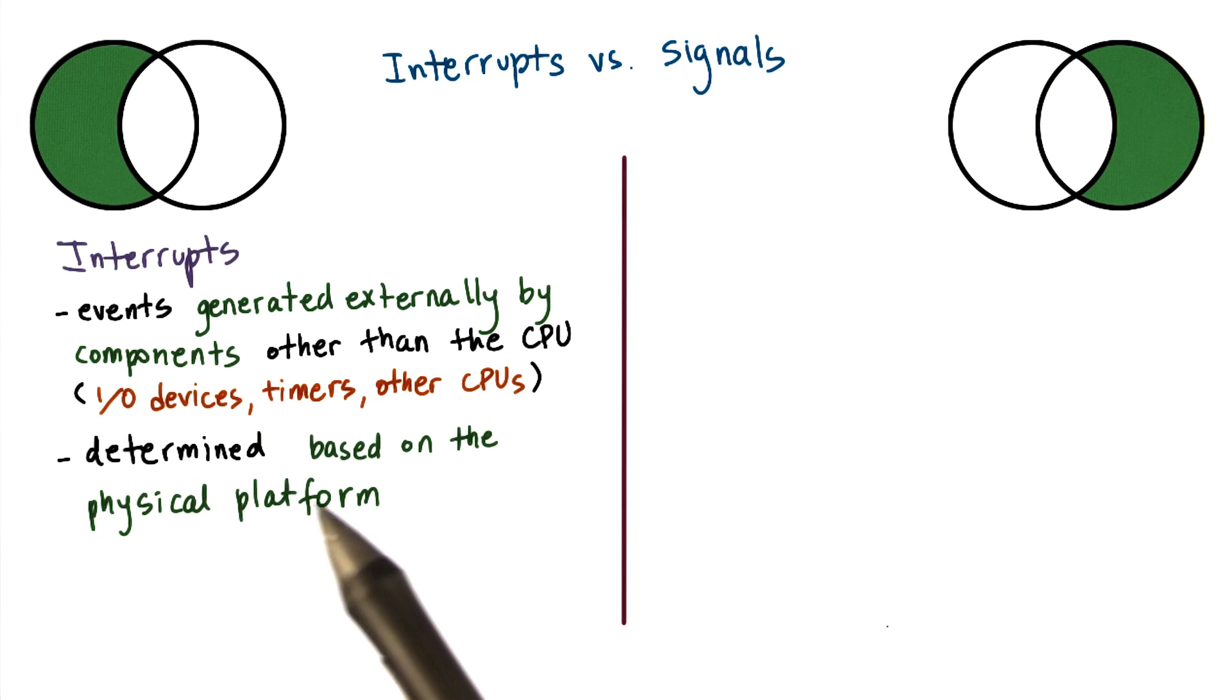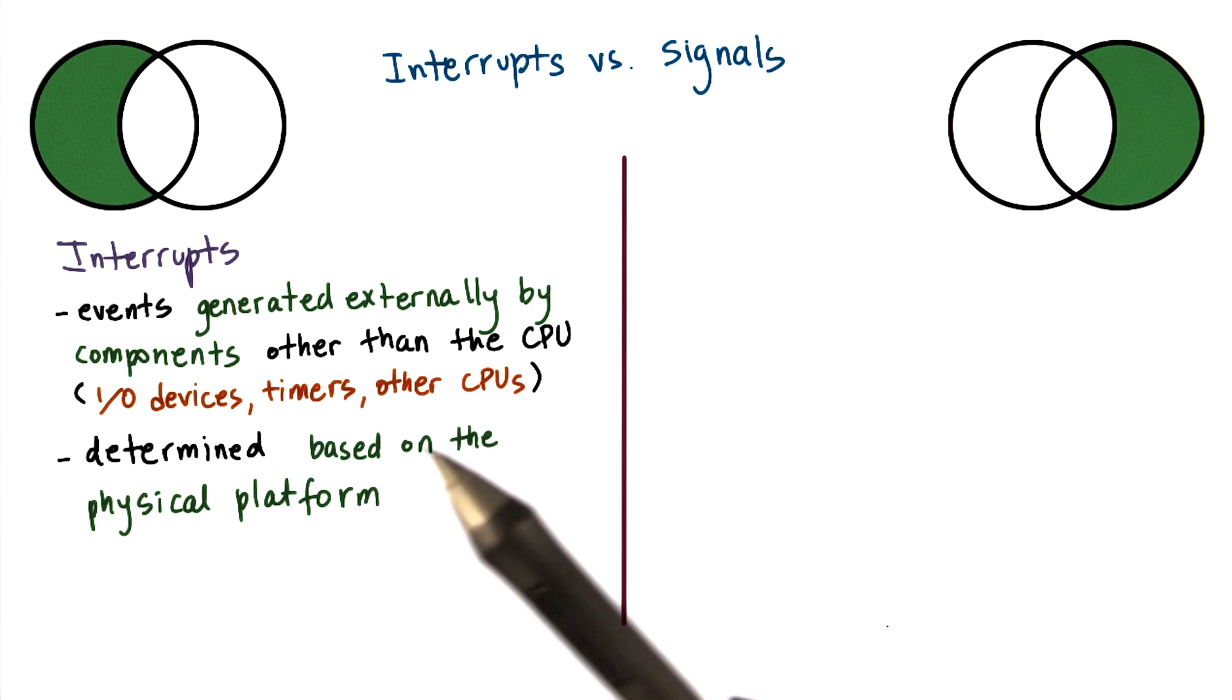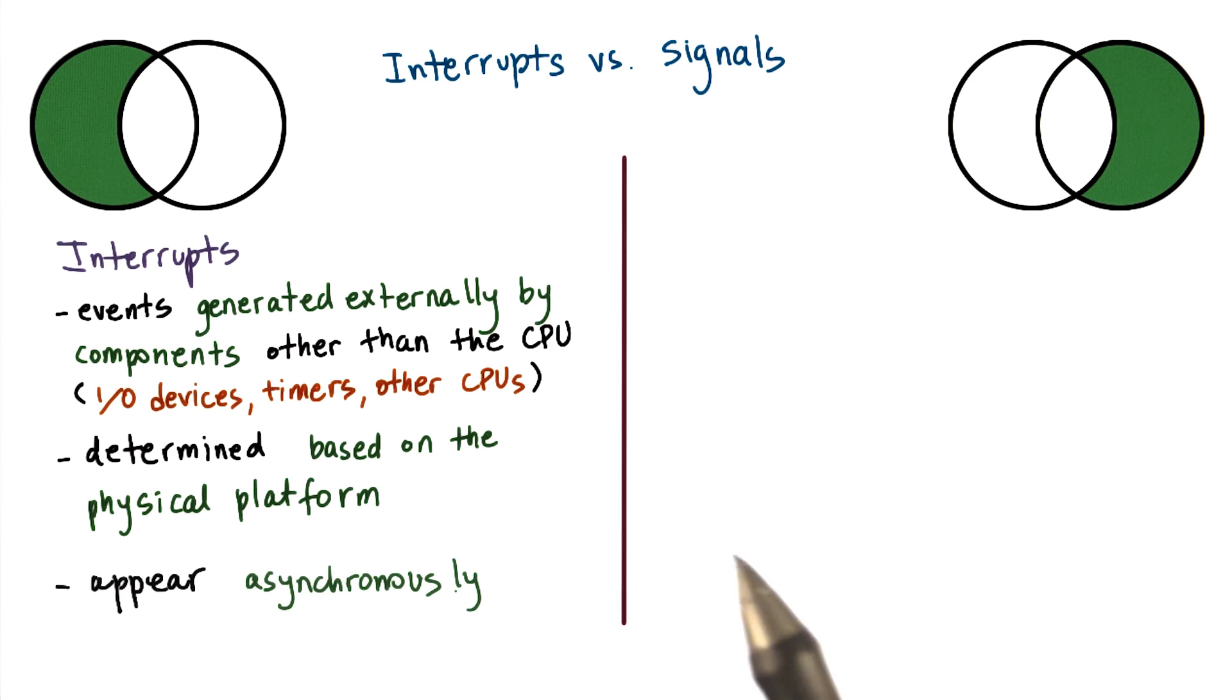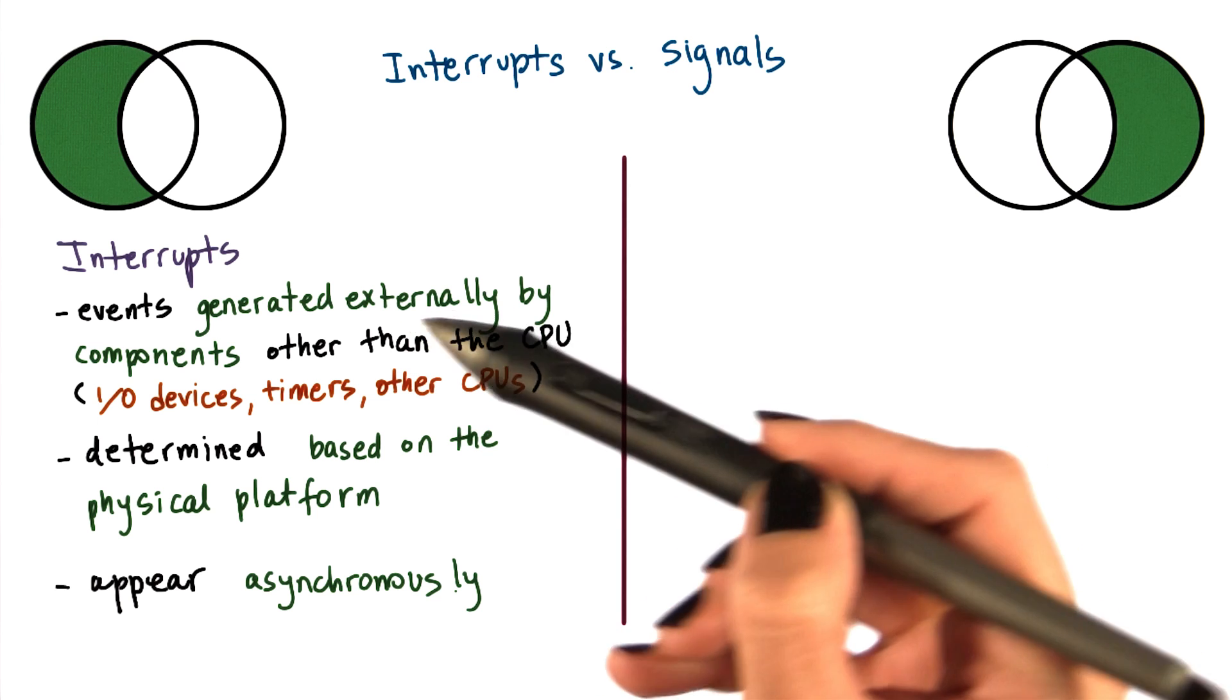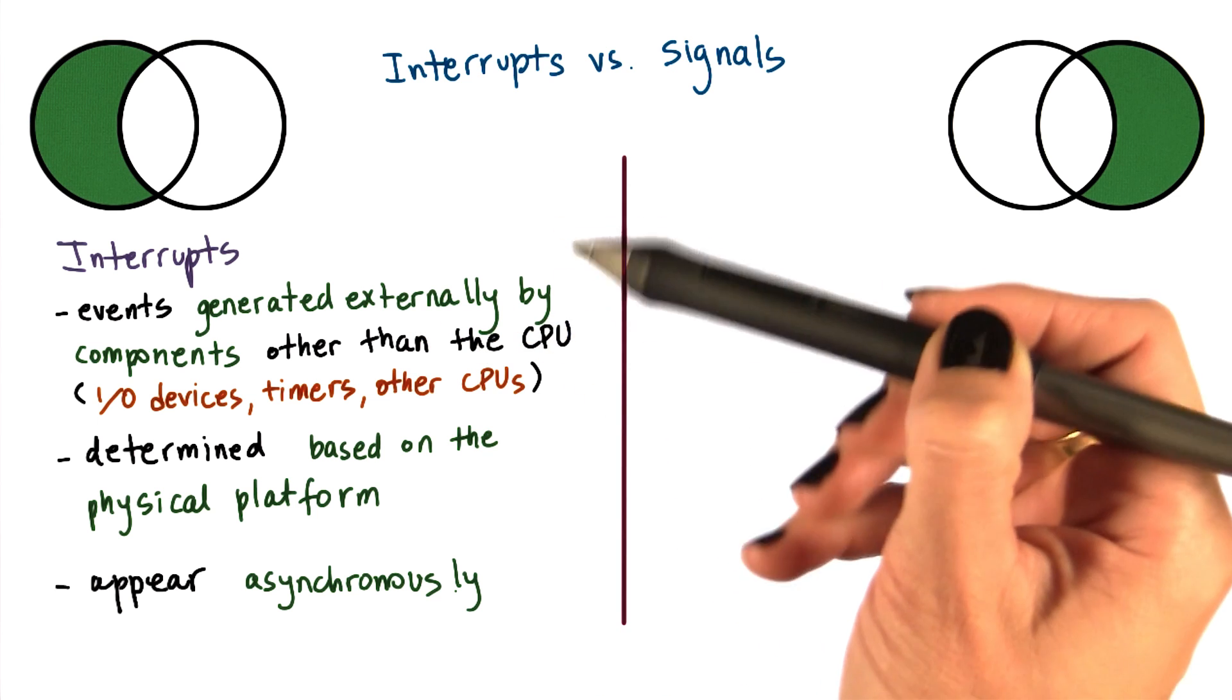Which particular interrupts can occur on a given platform depends on the specific configuration of the platform, like the types of devices that it has, for instance, or the details about the hardware architecture and similar features. Another important characteristic about interrupts is that they appear asynchronously. That's to say that they're not in a direct response to some specific action that's taking place on the CPU.